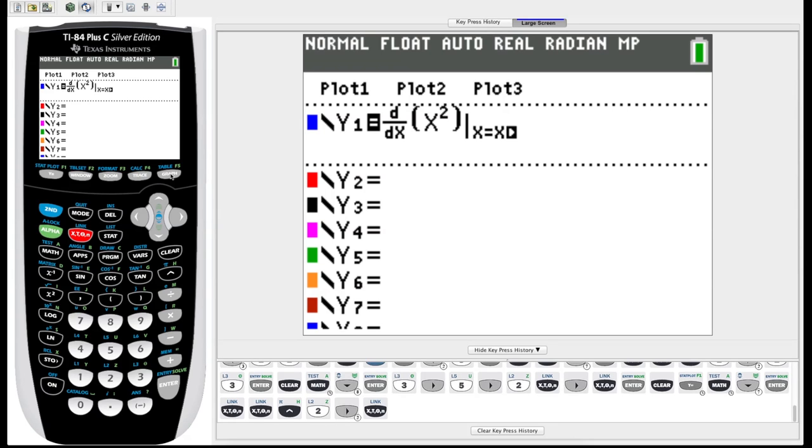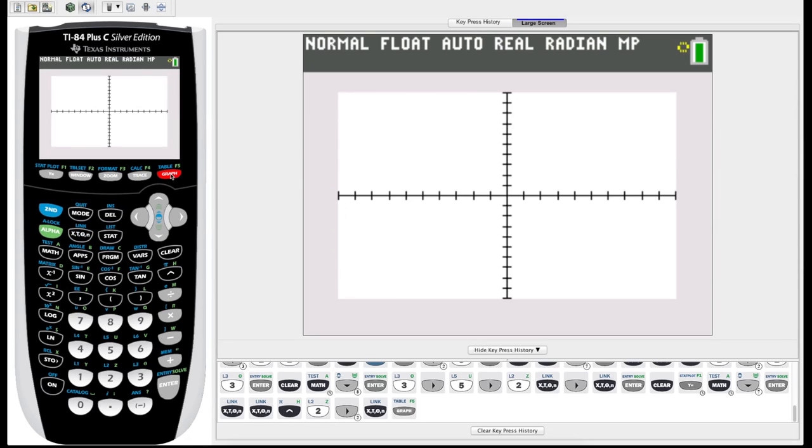So we would expect—let's hit graph here—we expect it to graph the line 2x, since that is the general derivative of x squared. And lo and behold, we are noticing it is graphing a line, looks like the line y equals 2x. You can also do this for integration in this same way.